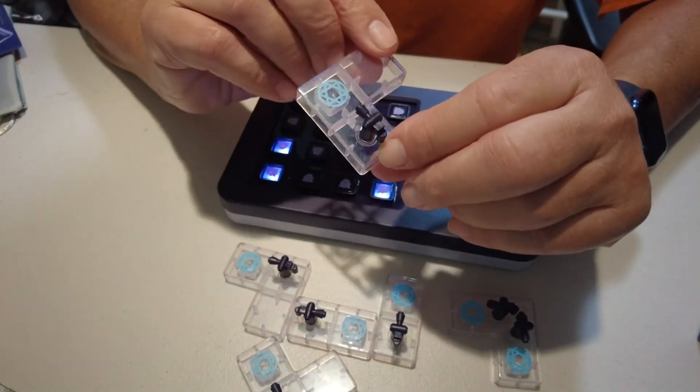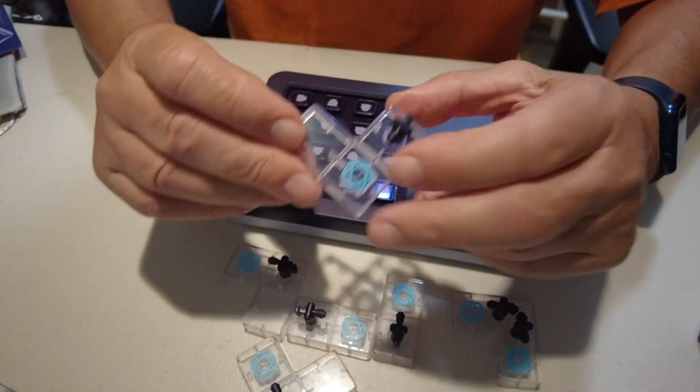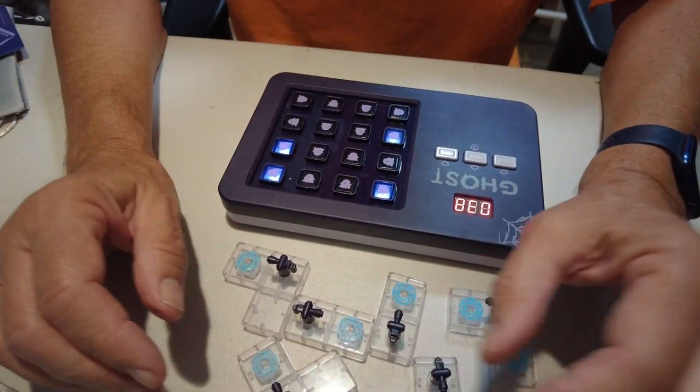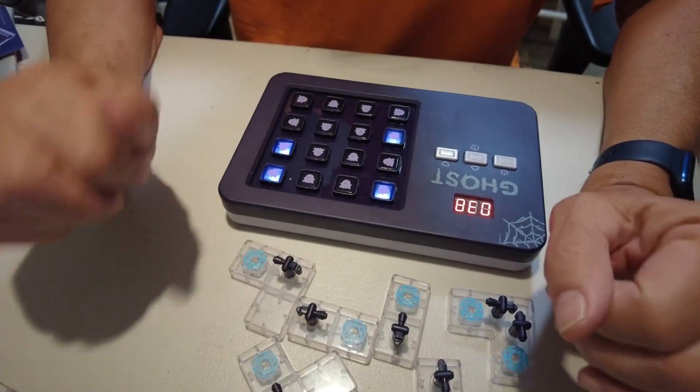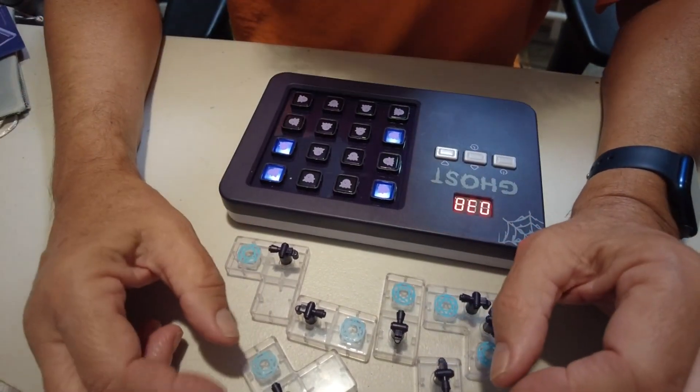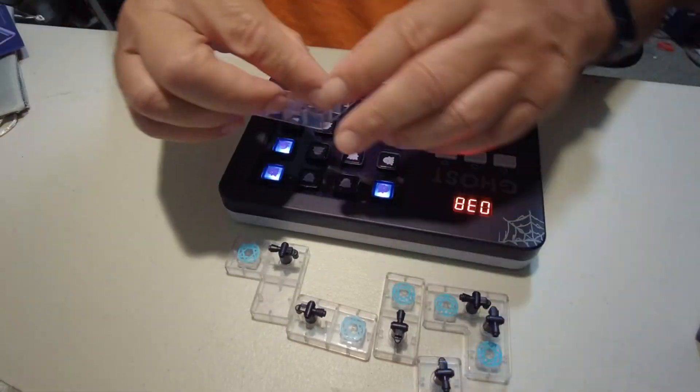So each of these little things is like a fire extinguisher to put out a fire or to squirt a ghost I guess, and what you have to do is figure out a way to put them all on and turn those lights out as you put the pieces on.